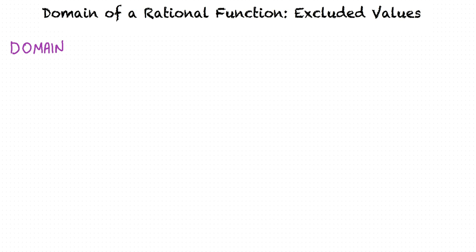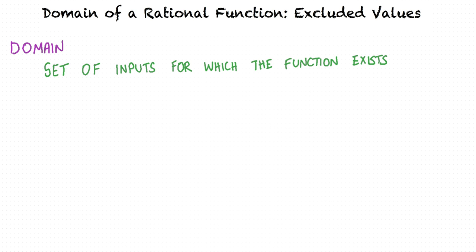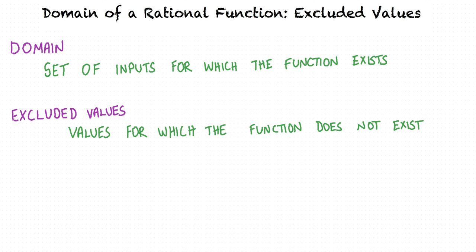What do you mean by the domain of a function? By definition, the domain of a function is the set of all inputs for which the function exists. On the other hand, excluded values are values for which the function does not exist, and hence excluded values are not included in the domain.